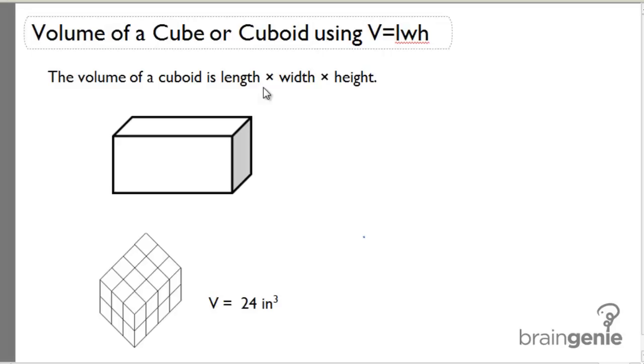To find the volume of a cube or a cuboid, we can use one of two formulas. The first formula we're going to talk about is volume equals length times width times height.